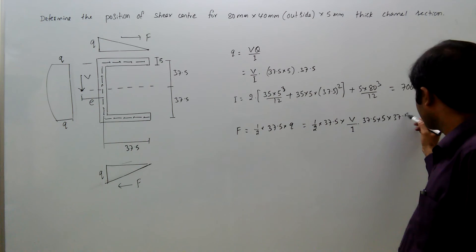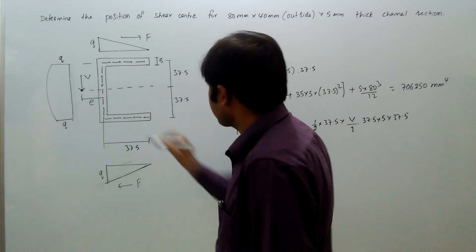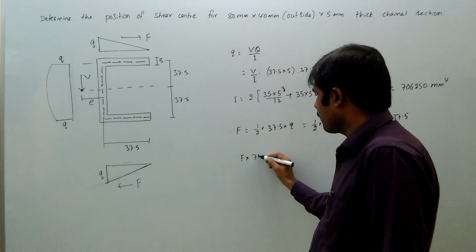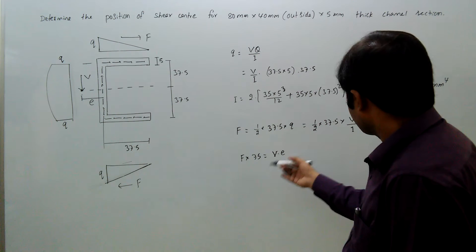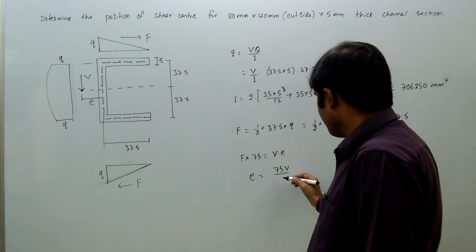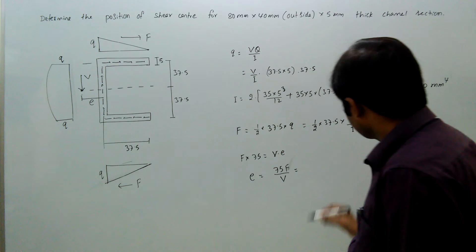We know this couple and anticlockwise couple, that is F times 75, equals V times e. So this is the equation: e equals 75F/V.